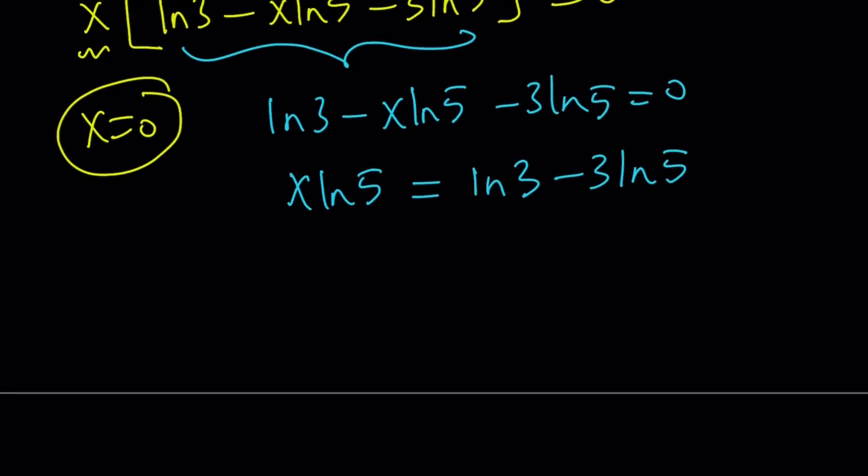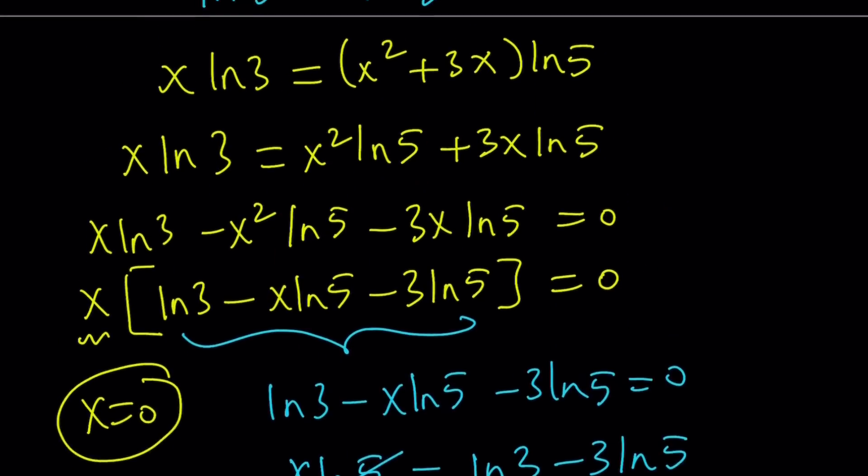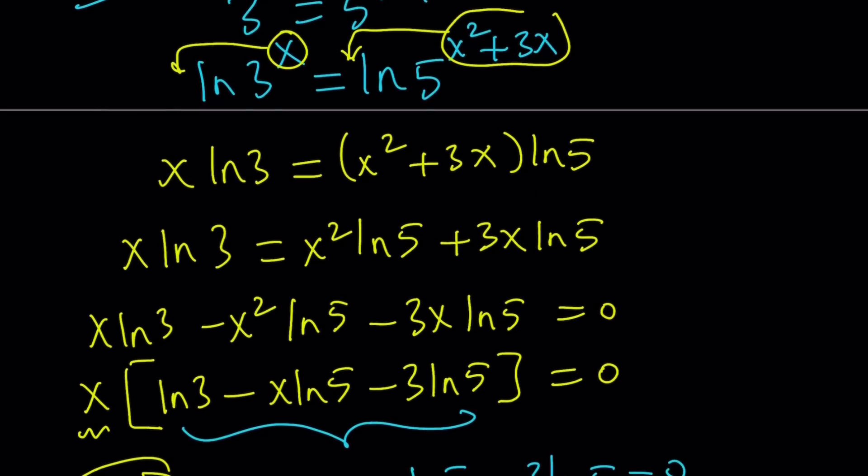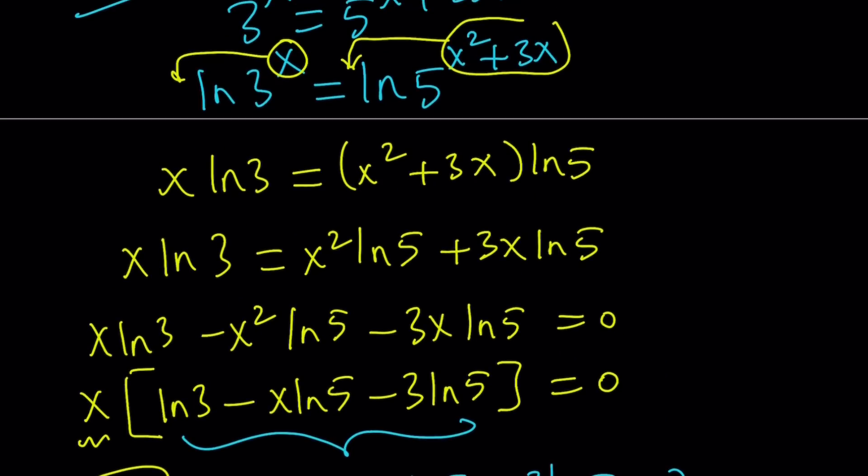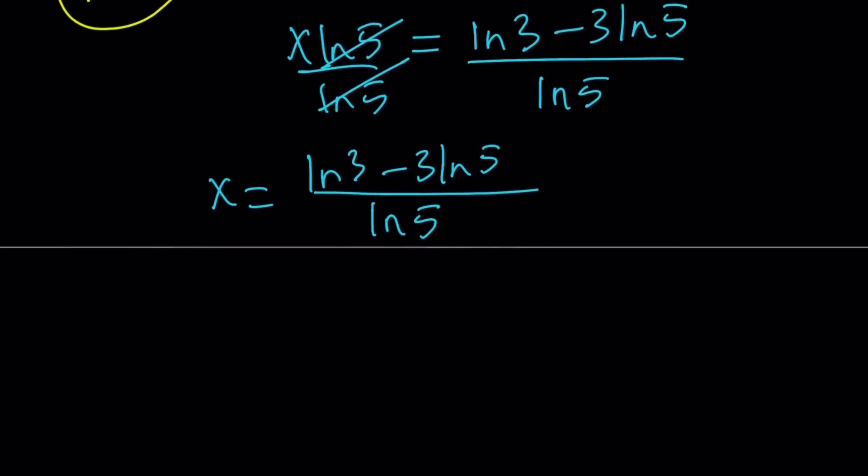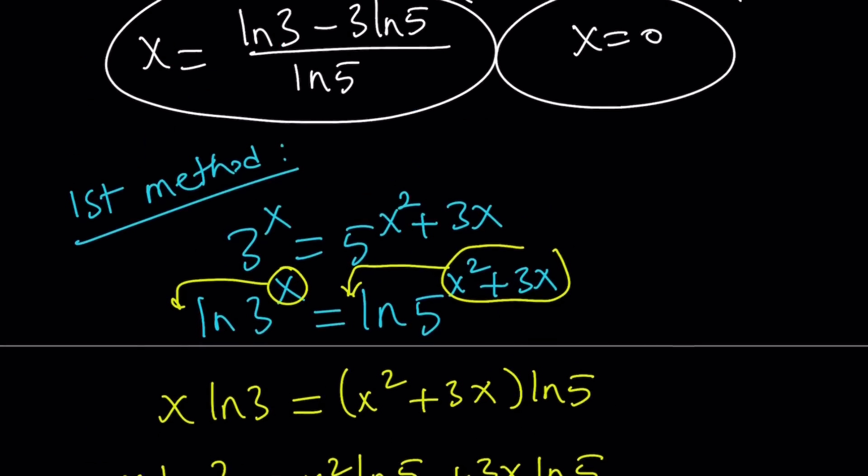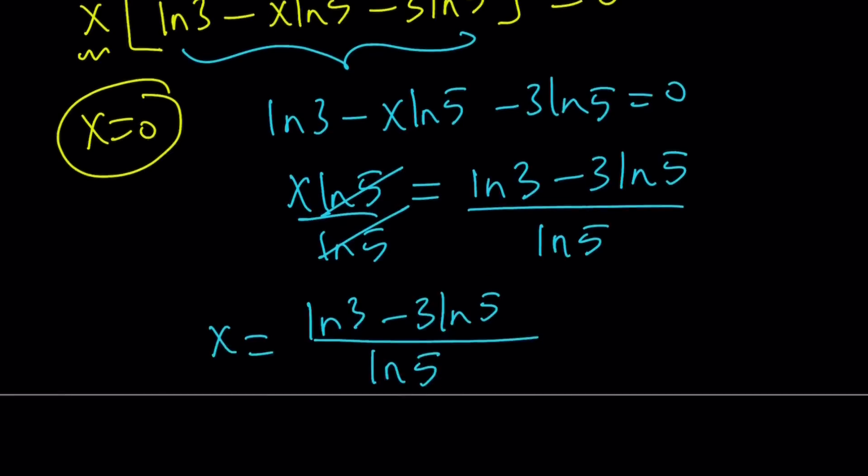Anyways, we could also keep the x·ln5 on the right-hand side, but I just like keeping it on the left-hand side. Anyways, divide both sides by ln5 and you'll get the answer. So, this gives us x = (ln3 - 3ln5)/ln5. Now, we get this simplified solution right away without getting into the 125 because we have a 3 here and we didn't really raise 5 to the third. Anyways, so we got the same answer as before, right? And obviously, x equals 0 is the other solution. We got two solutions again.